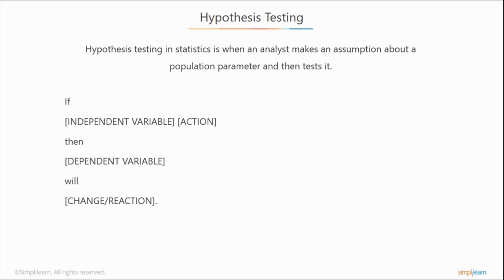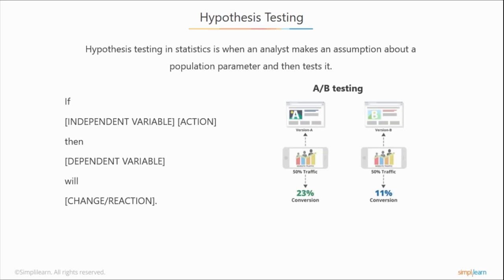To simplify: if this independent variable changes, then this dependent variable will cause this change. For example, if I use Calibri font, then my sales will increase — just a hypothetical example. With A-B testing, you have the A and B options. Maybe I'm testing Impact font versus Calibri, where website A uses Calibri.